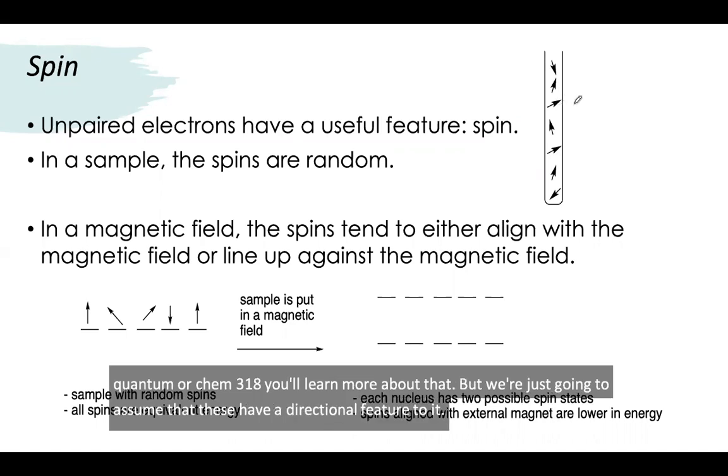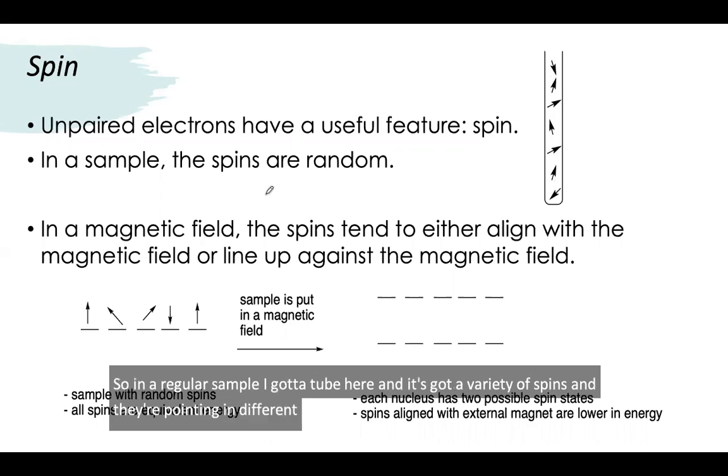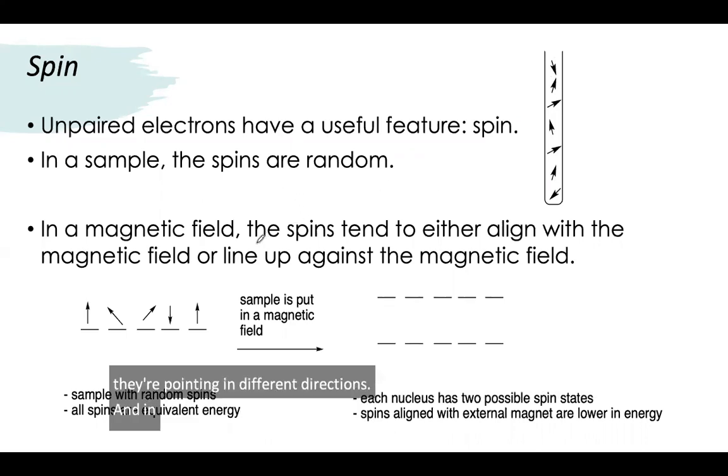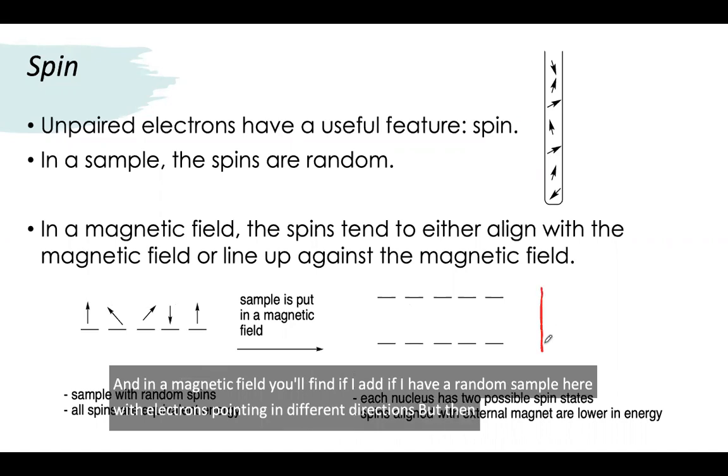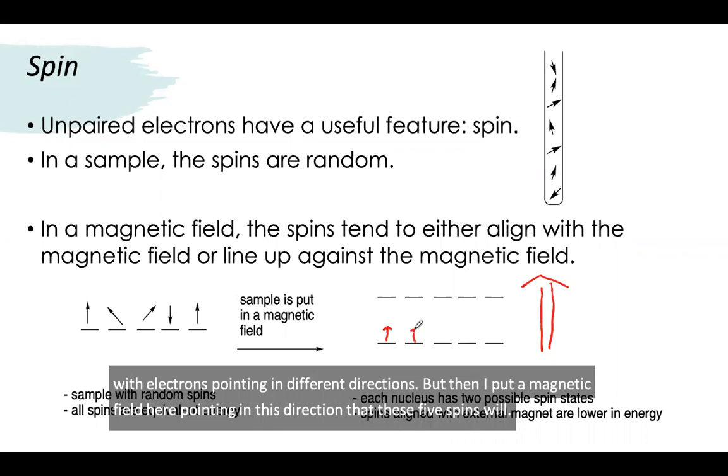In a regular sample I've got a tube here with a variety of spins pointing in different directions. In a magnetic field, if I have a random sample with electrons pointing in different directions but then I put a magnetic field pointing in this direction, these spins will try to line up with the magnet.